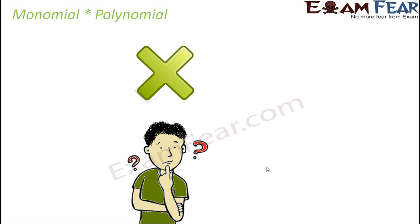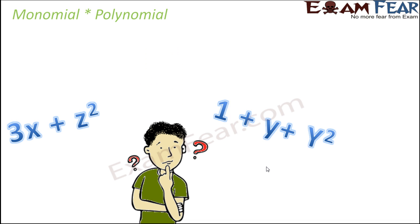Now what would happen if a monomial gets multiplied with a polynomial? Because till now the matter was quite simple - two monomials, both are simple, very easily we could find their product. But when you have situations like this...